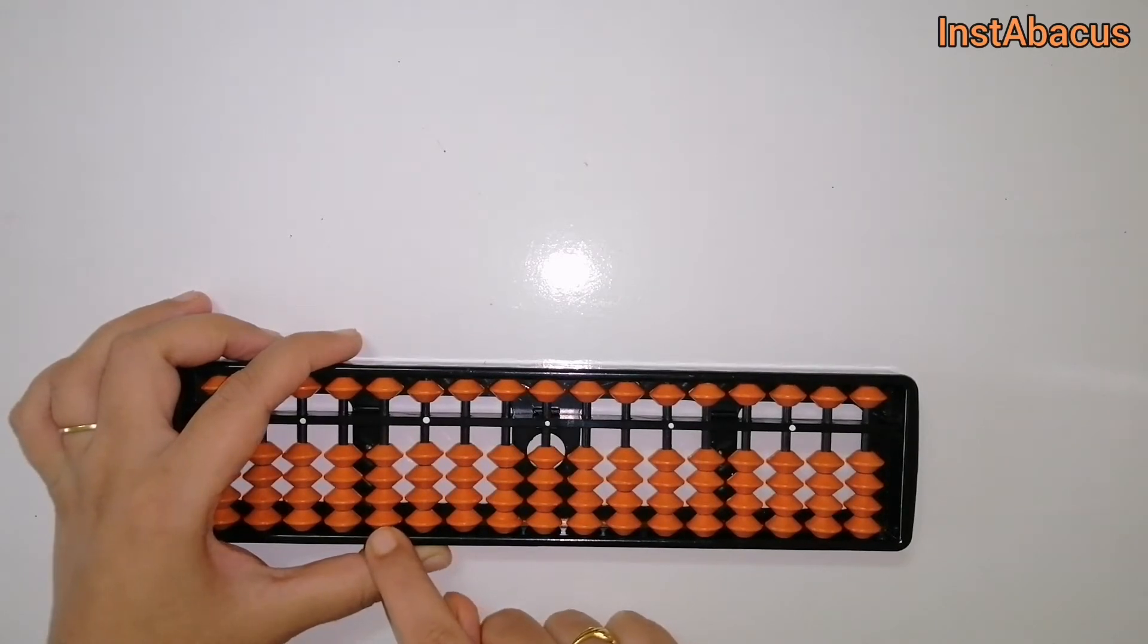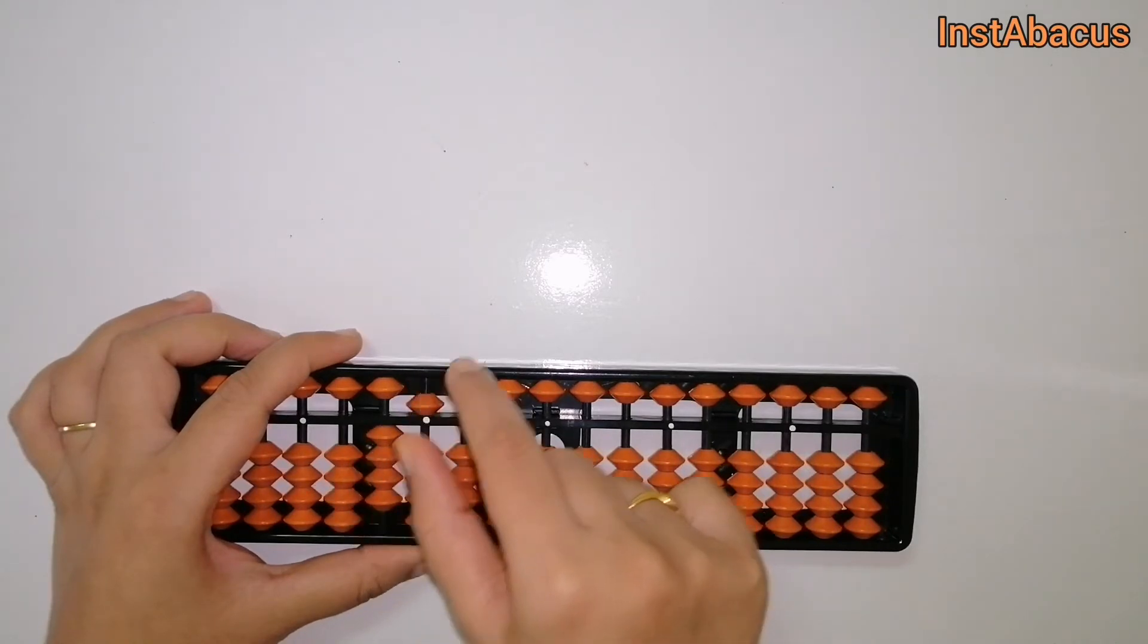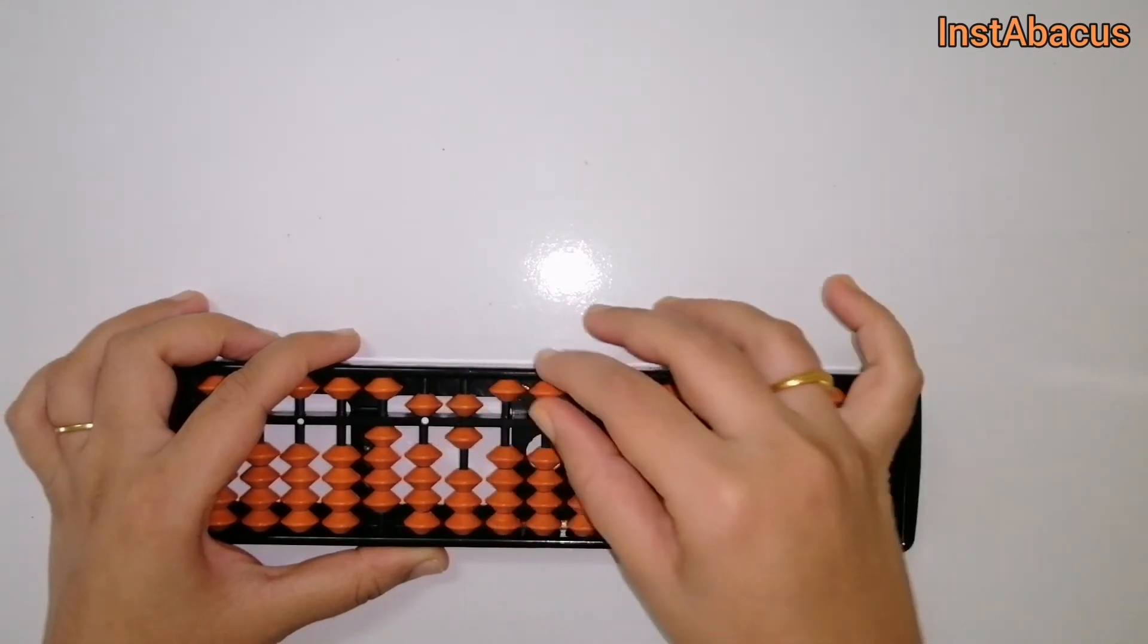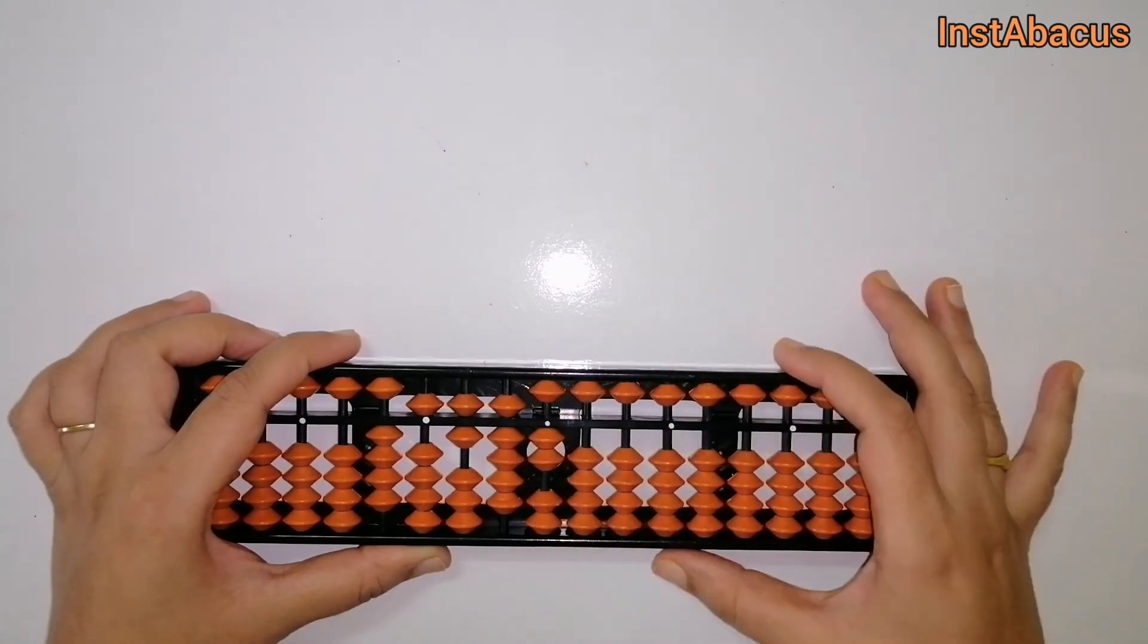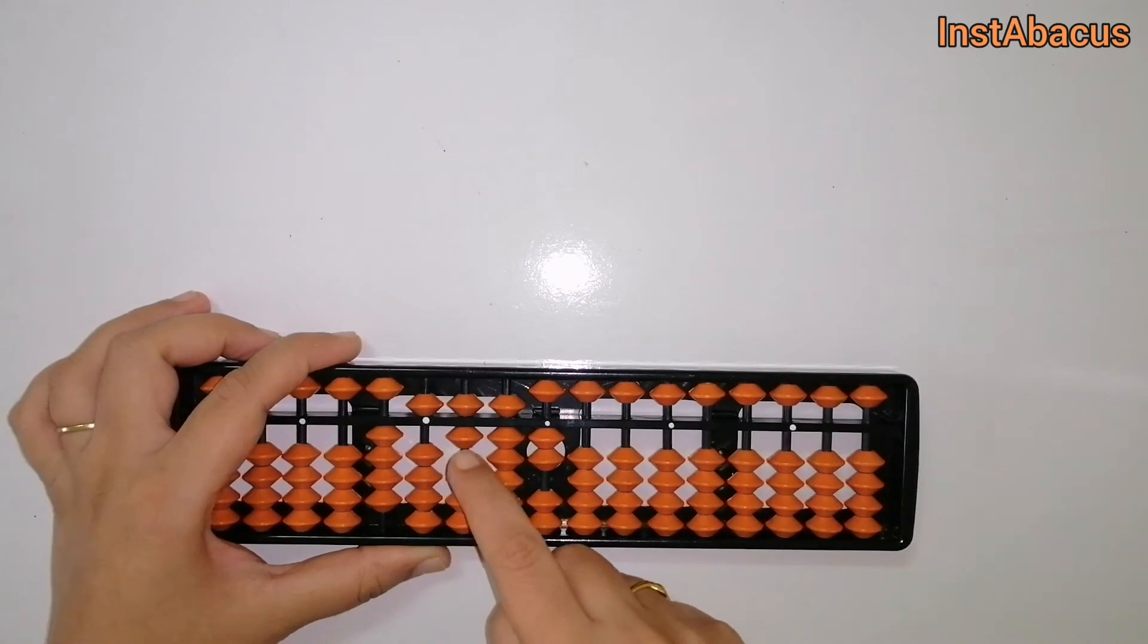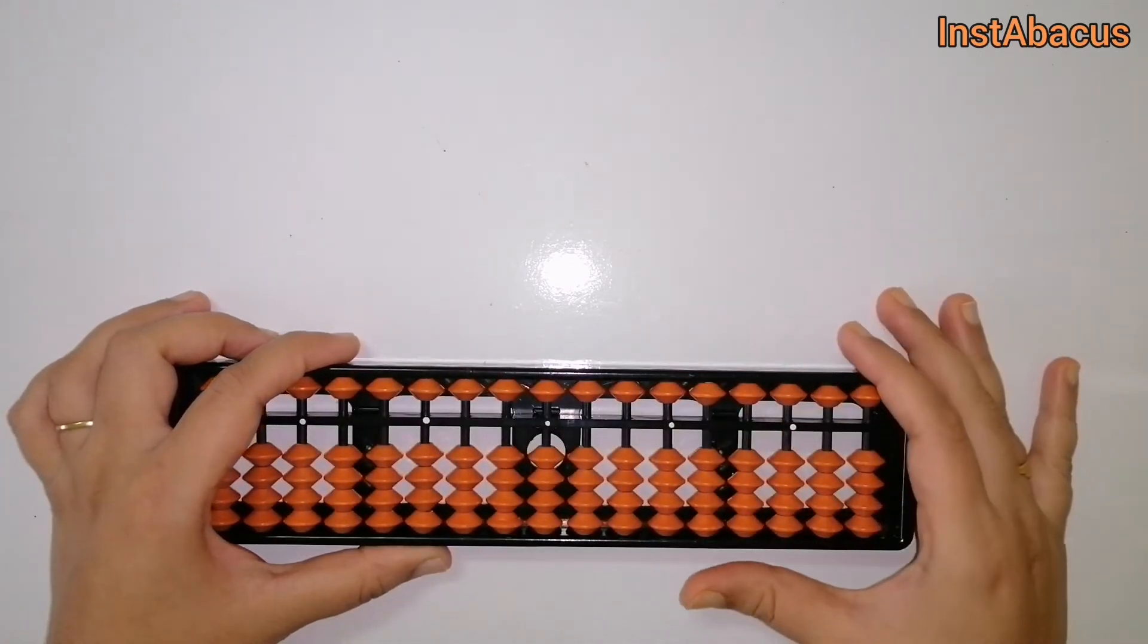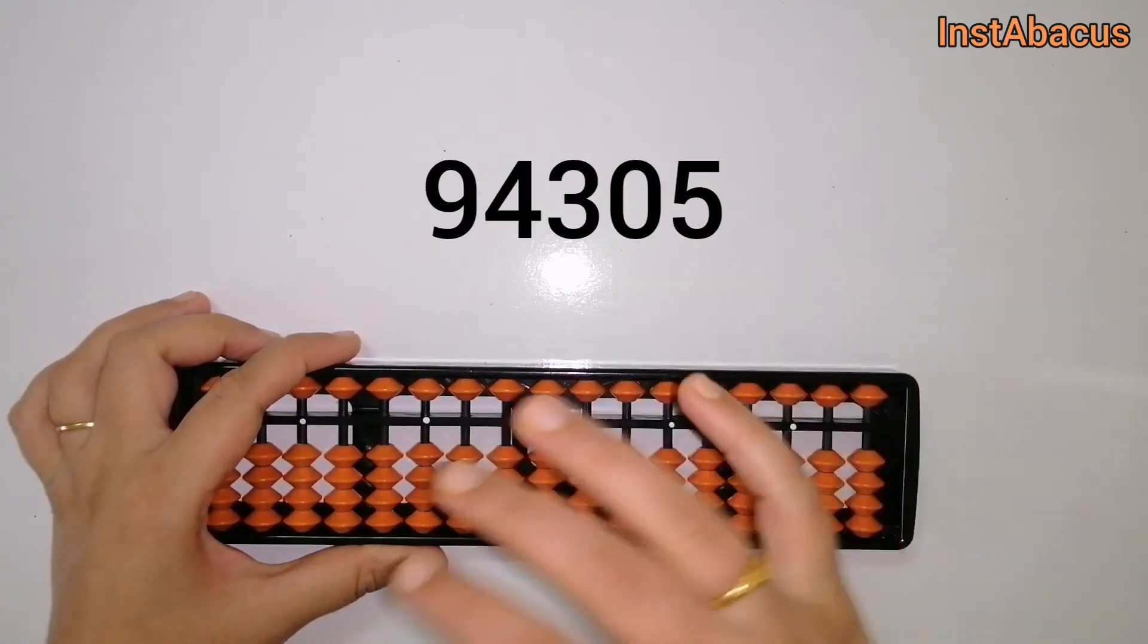We have to set 4, 5, 6, 9, and 2. So it becomes 45,692. That's correct. Next: 94,305.